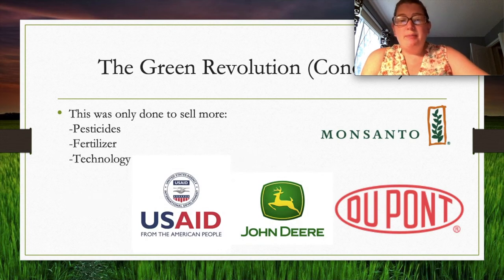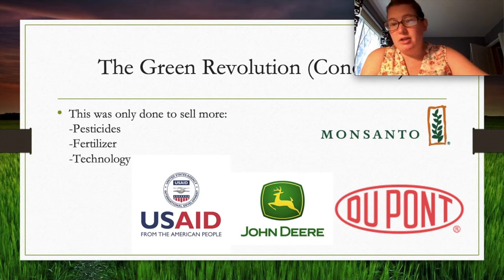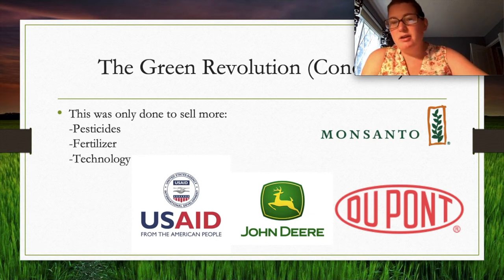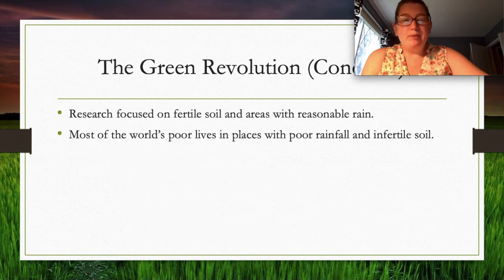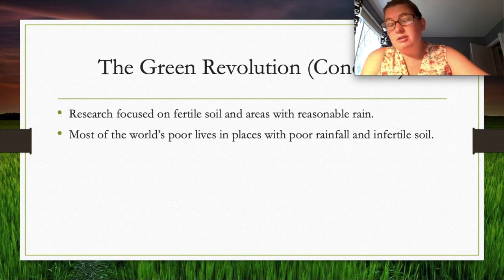Because of pest resistance, more fertilizers, pesticides, and technology are being sold to help farmers use the same seeds that were working before — creating a vicious cycle. Additionally, research was focused on fertile soils and areas with reliable rainfall, but most of the world's poor populations live in areas with poor rainfall and infertile soils, so the impact was limited in those regions.